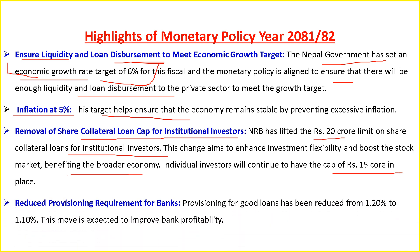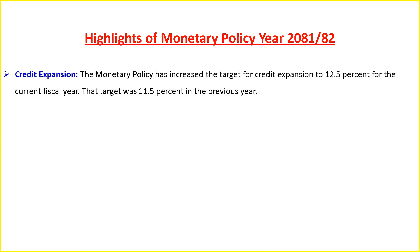Provisioning for good loans has been reduced from 1.20 percent to 1.10 percent. This move is expected to improve bank profitability. Additionally, the monetary policy has increased the target for credit expansion to 12.5 percent, up from 11.5 percent of the previous year.